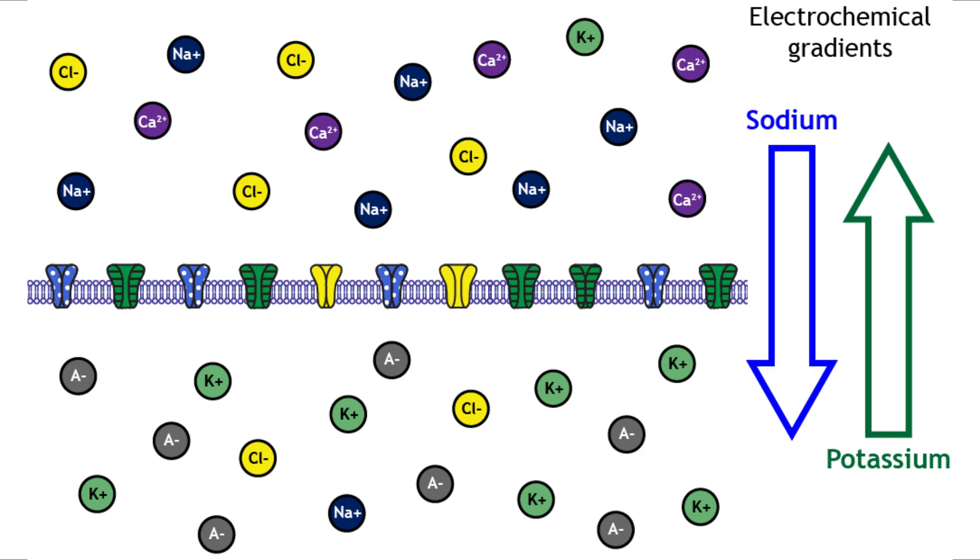For example, at rest, potassium is driven out by its higher internal concentration, although the negative inside can pull some potassium back in. And sodium is driven in both by its concentration gradient, being high on the outside, and by the negative internal charge. If the membrane becomes permeable to an ion via open channels, for example, that ion will move according to its electrochemical gradient.